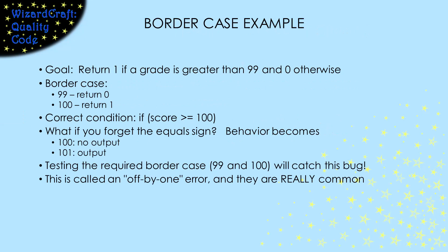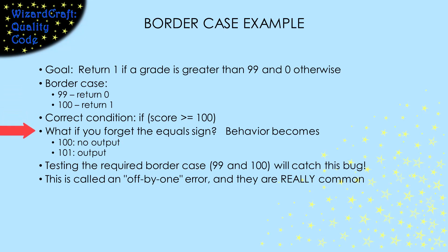A border case is a situation where a small change in values causes a fundamentally different behavior. As an example, let's think about a function whose job is to return one if a grade is higher than 99 and zero otherwise. Our border case is the values 99 and 100, because that's where the behavior changes. Notice that a border case is always two values, one on each side of the border. The correct condition is when the score is greater than or equal to 100, but suppose I forgot that equal sign. Then the code would have a border at 100 and 101 instead of the required 99 and 100. If we tested at the two points of the required border case, we would catch this bug because the behavior at 100 would be incorrect. This kind of error is called an off-by-one error and they are really common.